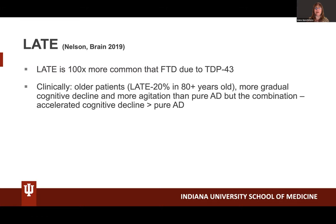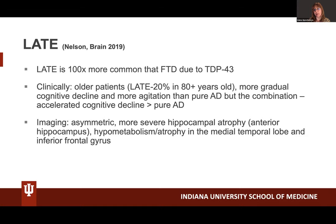LATE individuals are older, have more gradual cognitive decline, and present with more agitation than pure AD. But when TDP-43 LATE and AD are present at the same time, cognitive decline is faster compared to pure AD. In terms of imaging, LATE cases tend to be more asymmetric, have more severe hippocampal atrophy and involve more the anterior portion of the hippocampus, while Alzheimer's involves both the anterior and posterior hippocampus. They could also have atrophy or hypometabolism in the medial temporal lobe and the anterior frontal gyrus.